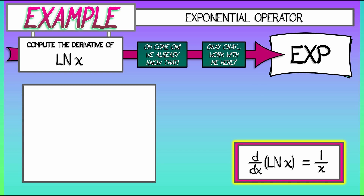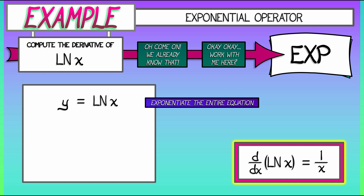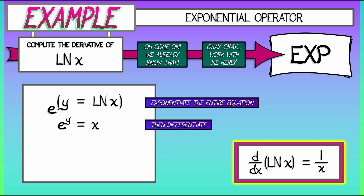We're going to begin just like usual. We're going to set our function log equal to y. Now we're going to apply the exponentiation operator to both sides. On the left, we have e to the y. On the right, we have e to the log of x, which is x. Then, differentiating both sides of this equation, what do we get?